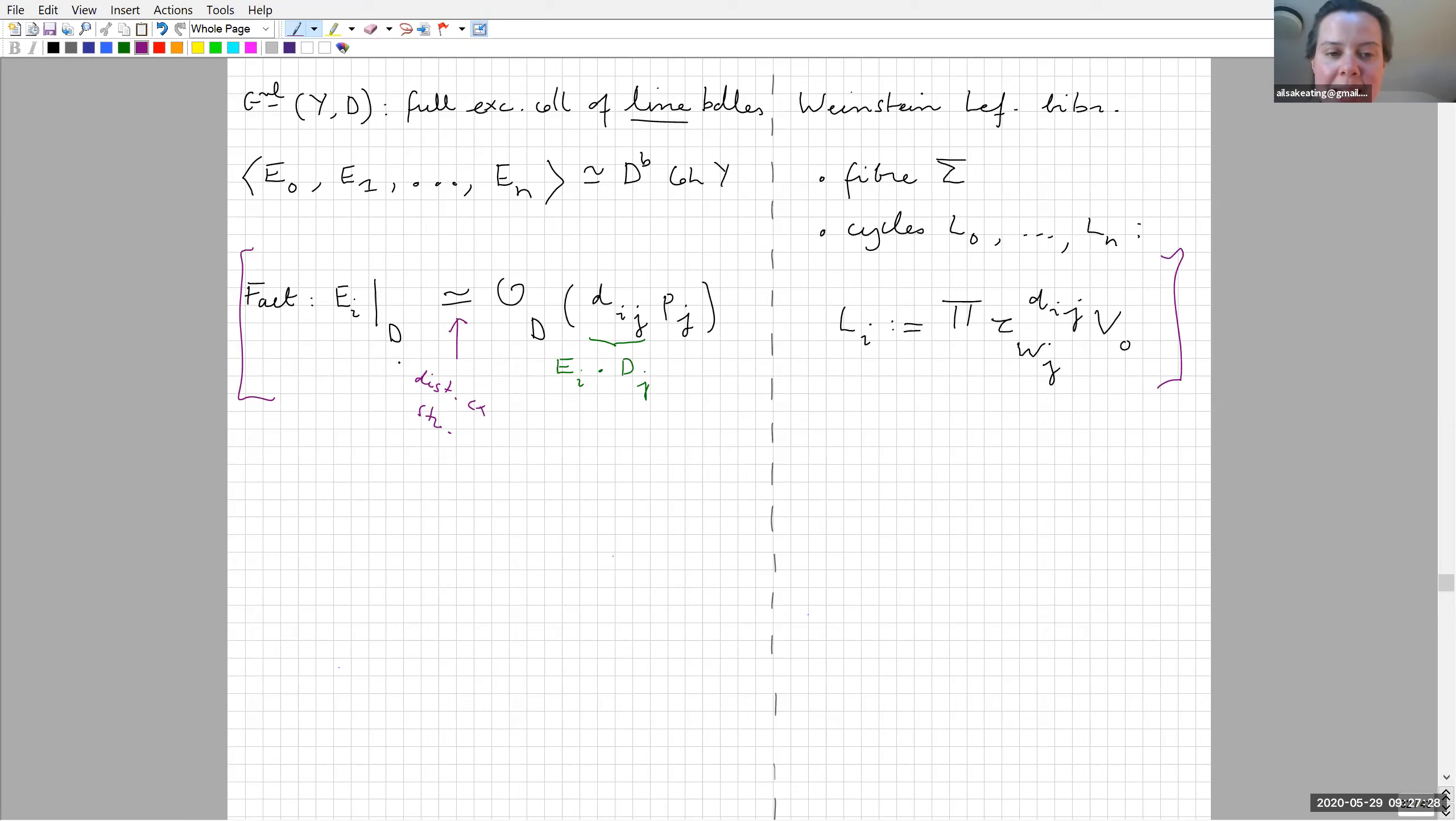I claim that we can get a mirror as follows: have the fiber be sigma as before, where sigma is a K-punctured elliptic curve, where K is the number of components of D, and vanishing cycles L₀ up to Lₙ associated to each of the Eis. This is the bit where it's saying you set things up so that mirror symmetry falls into place. This is the key fact in the talk. If I take a line bundle on Y and restrict it to D, because of the distinguished complex structure assumption—this was the fact that we were picking minus one—if I take Ei and restrict it to D, that's actually determined by just its intersection theory with the components of D.